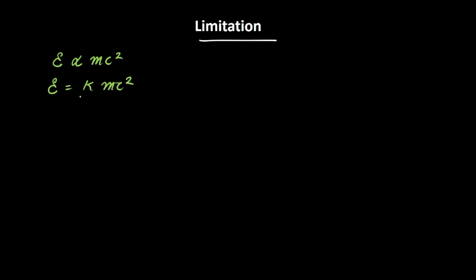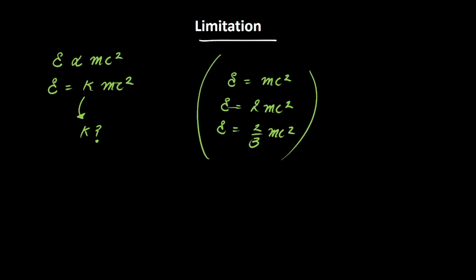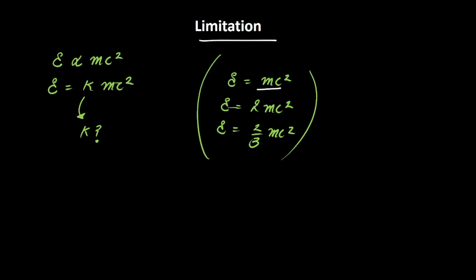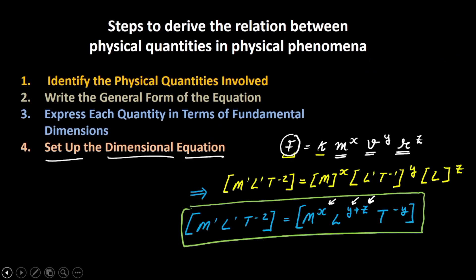There is a major limitation of this application. We derived that E is directly proportional to mc², or E = k · mc², but we cannot find the value of the constant k using this method. Would it be E = mc², E = 2mc², or E = (2/3)mc²? We are unaware of that. All we can prove is that E is directly proportional to mc², but the value of the constant remains unknown. I hope you understood this entire video — see you in the next one. Bye-bye!